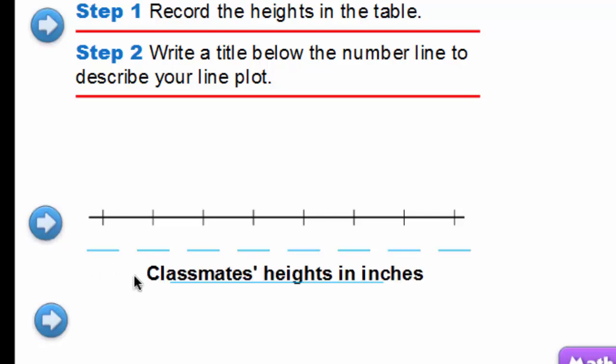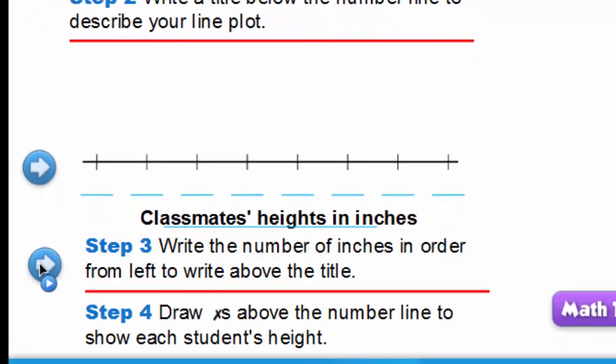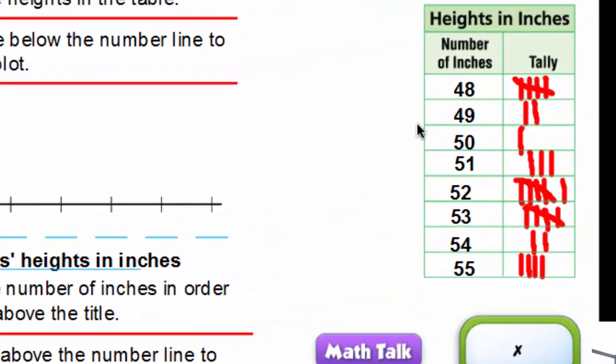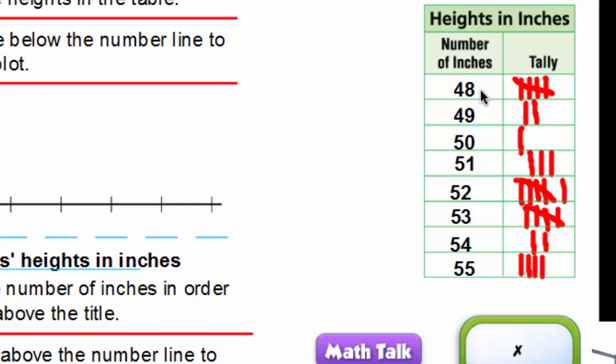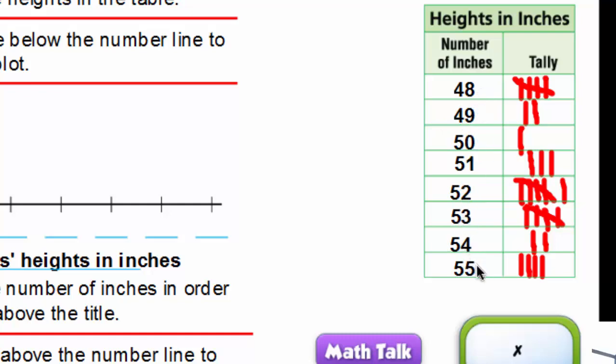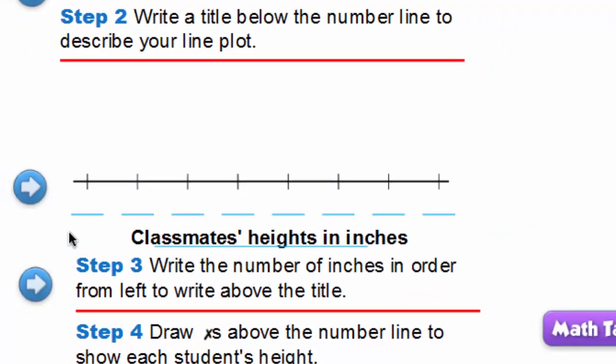Here is our number line. We're going to write a title below the number line to describe the line plot. Our title is classmates heights in inches. Then we're going to write the number of inches in order from left to right above the title.